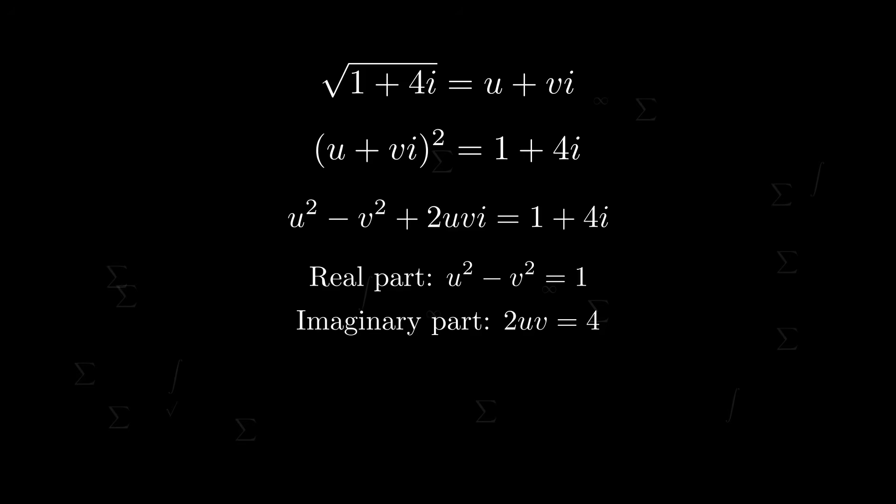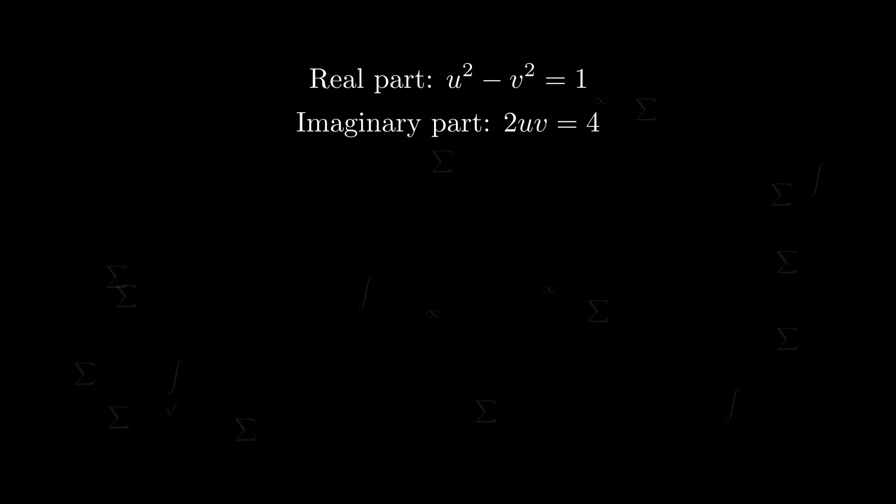When we do that, however, we're getting two equations and two unknowns. Fortunately, we can indeed solve this. Let's isolate v first. That's not too bad. Cancel two on both sides, dividing by u as well. We can substitute this and get an equation entirely in terms of u.